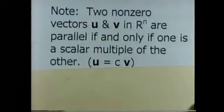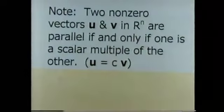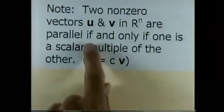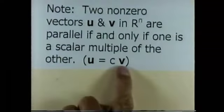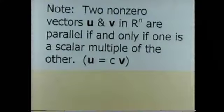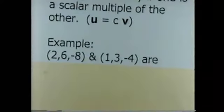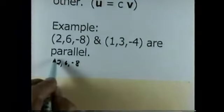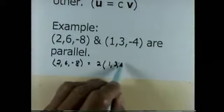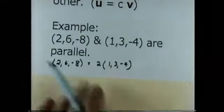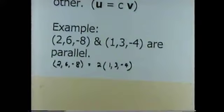Two non-zero vectors u and v in n-space are parallel if and only if one is a scalar multiple of the other. In other words, u and v are parallel if and only if u equals c times v for some scalar c. Example: 2, 6, negative 8 and 1, 3, negative 4 are parallel, because 2, 6, negative 8 equals 2 times 1, 3, negative 4. So 2, 6, negative 8 is a scalar multiple of 1, 3, negative 4, and therefore the vectors are parallel.